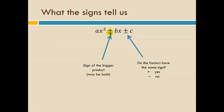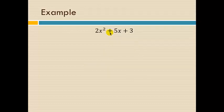So let's take a look at four quick examples where we look at just that. Here we have 2x squared plus 5x plus 3. The last sign being a plus 3, a positive, tells us that both our factors use the same sign.